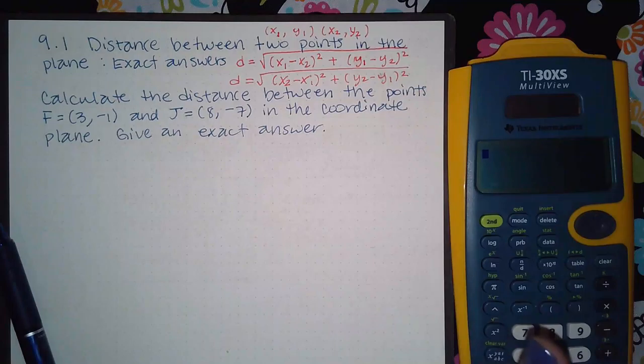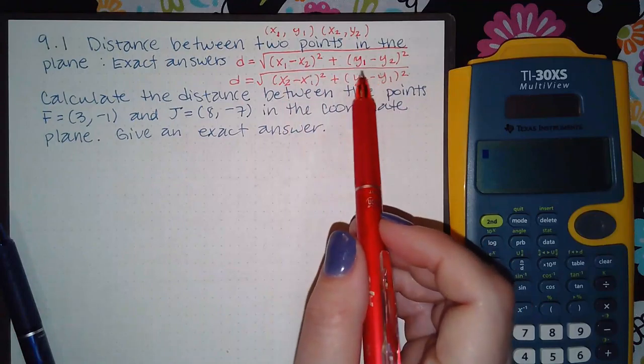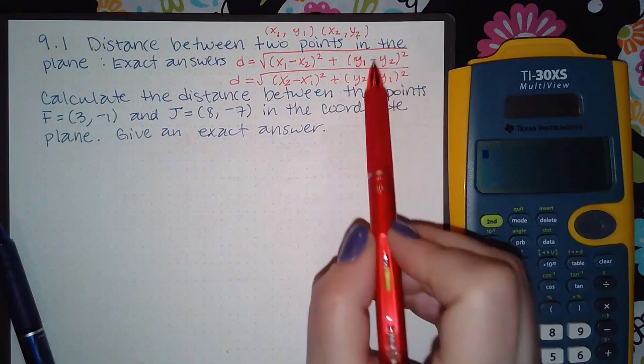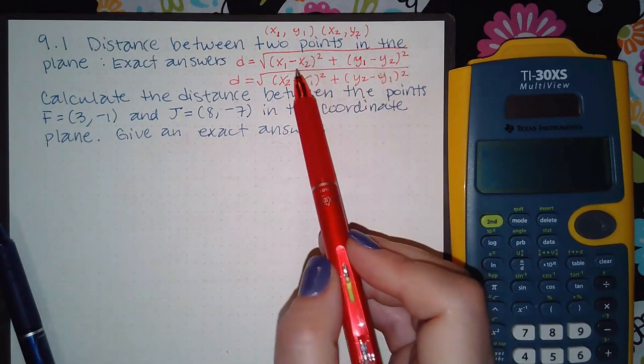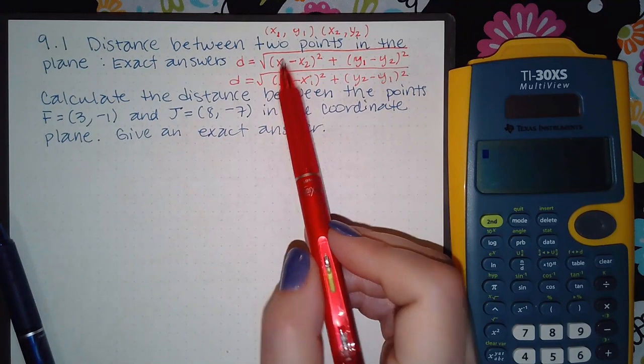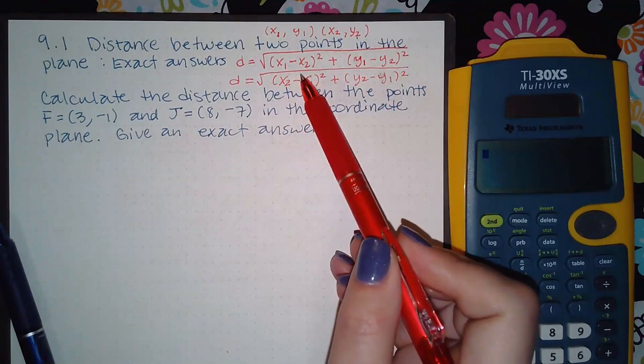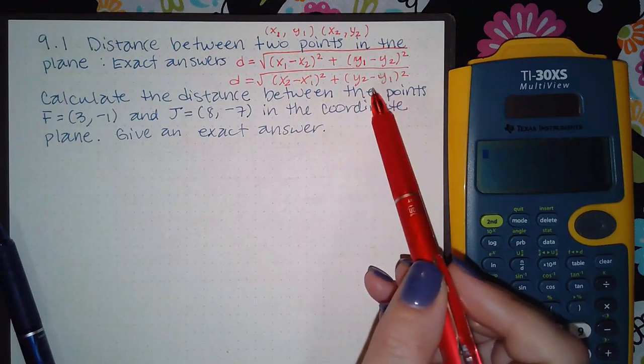What happens if I switch the 2 and the 3? I get 3 minus 2 which is positive 1, and when I square that I still get positive 1. The fact that you're squaring this difference means it's going to come out the same number anyway. It really doesn't matter which order you subtract them in. What matters is that you subtract the x values together and then you subtract the y values together. Typically I like to use the first one, so when I go through the problems I'll be using the first one.